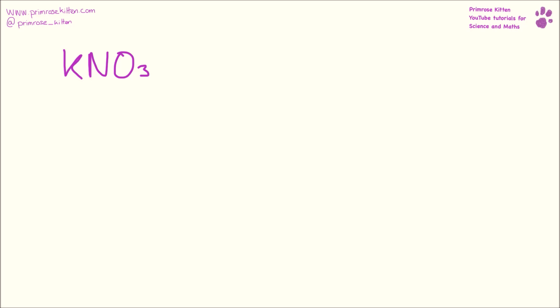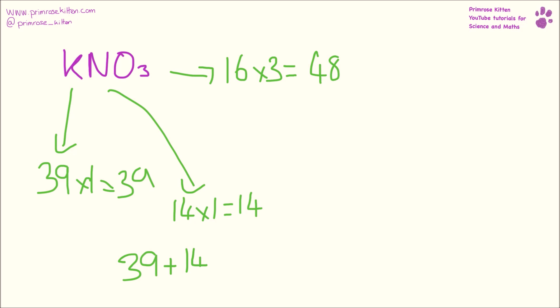Here we have potassium nitrate. Potassium has a mass of 39, and there's one of them, so that gives us 39. Nitrogen has a mass of 14, and there's one nitrogen, so that's 14. Oxygen has a mass of 16, and there's three of them, so that gives us 48. If we take 39 plus 14 plus 48, we will get a total mass of 101.